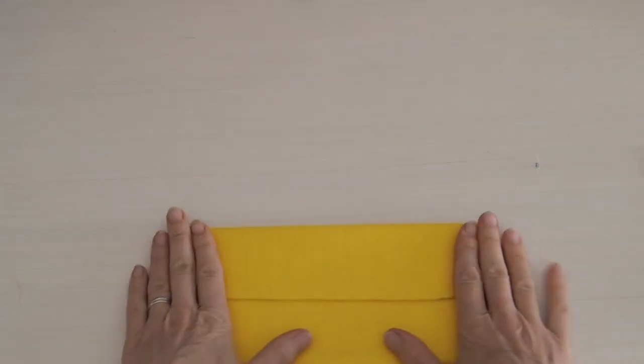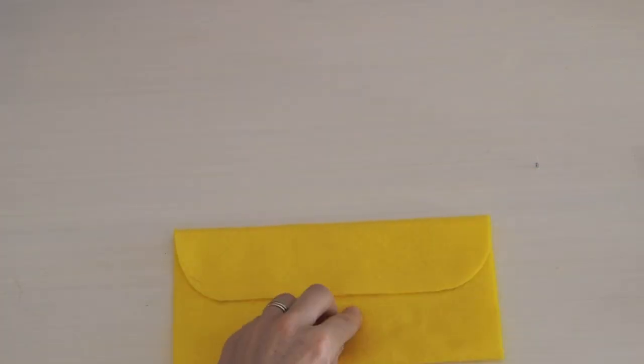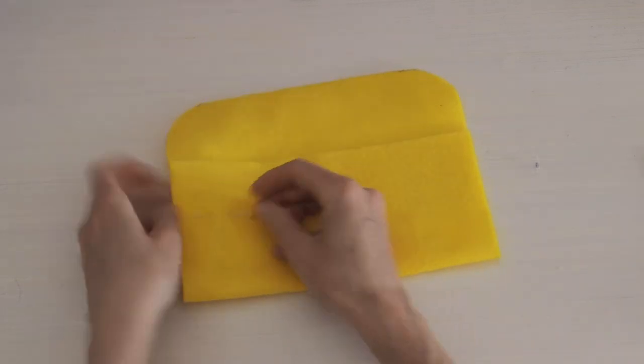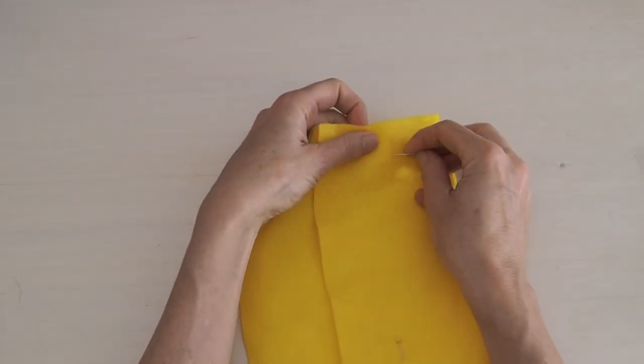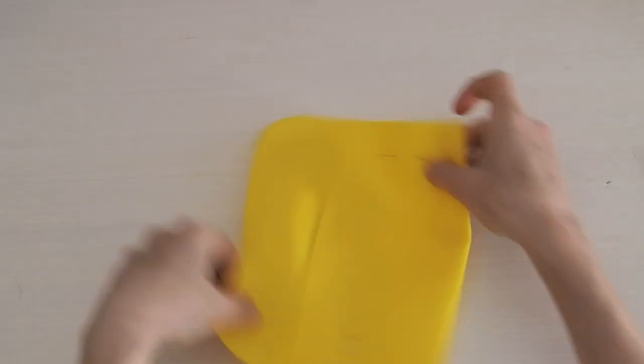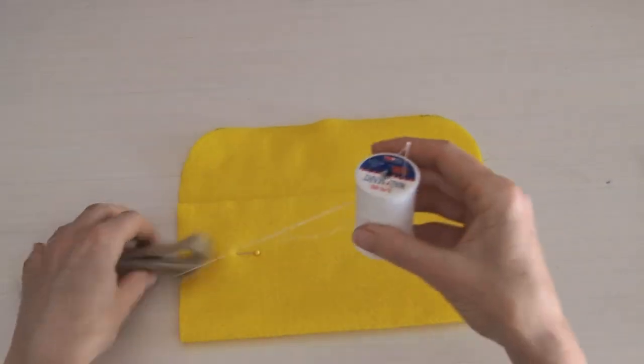Once those edges are cut we're going to put down that flap again and now we're going to pin it. This is where if you would like to pin to make sure it stays in place before you sew it. That's what I do because I have a tendency to always shift things around and then they're not straight anymore.